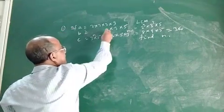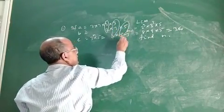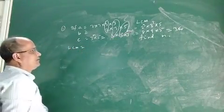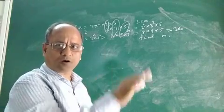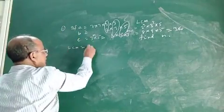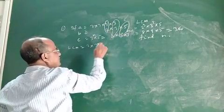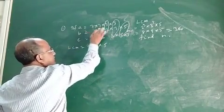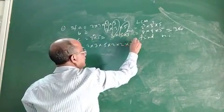Now we find the LCM. The LCM is the product of all common factors and all non-common factors. It is 2 into 3 — take one 2 from the 2s, one 3 from the 3s, and one 5 from the 5s. Then the non-common factors are 2 into 2 and 3 to the power N minus 1.